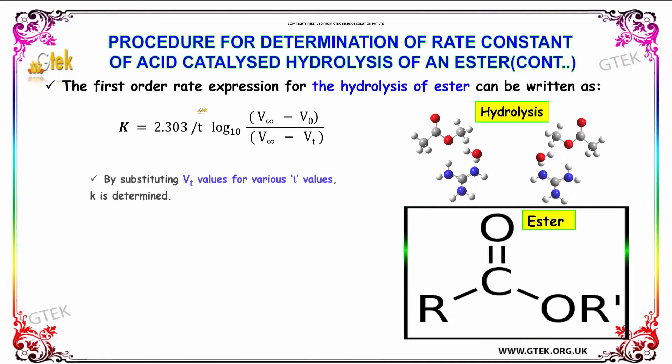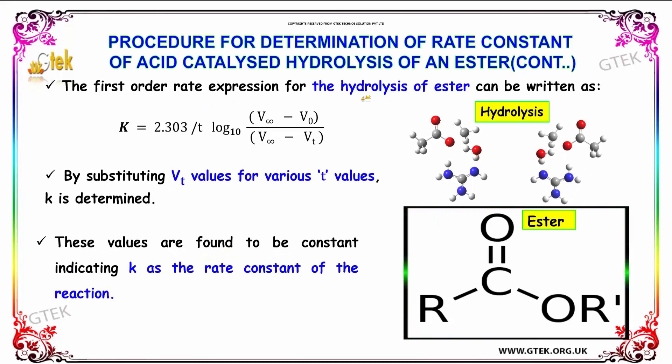The first order rate expression for the hydrolysis of ester can be written as: k = 2.303/t × log₁₀[(V∞ - V₀)/(V∞ - Vₜ)].